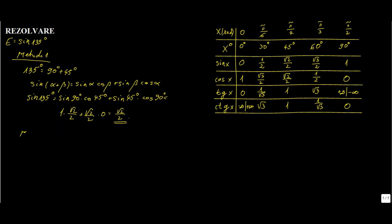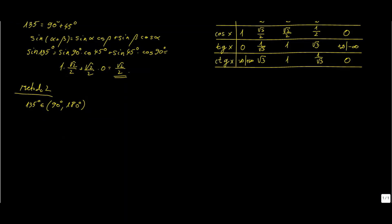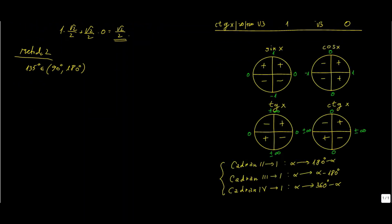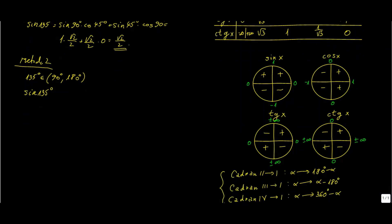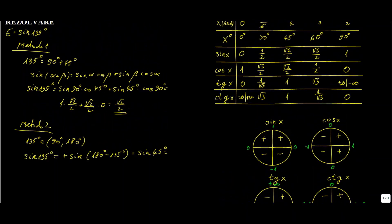Metoda a doua: unghiul de 135 de grade care ni se dă este în al doilea cadran, deci este între 90 și 180 de grade. Vom reduce unghiul nostru la primul cadran. Formulele de reducere la primul cadran: sinus de 135 de grade egal cu, în primul rând, ne uităm ce semn are sinusul în al doilea cadran — sinusul este pozitiv, deci egal cu plus sinus de, iar un unghi din cadranul 2 în 1 se transformă prin formula alfa trece în 180 minus alfa, deci este sinus de 180 minus 135 de grade, adică egal cu sinus de 45 de grade. Ne uităm în tabelul de valori: sinus de 45 de grade egal cu radical din 2 pe 2.